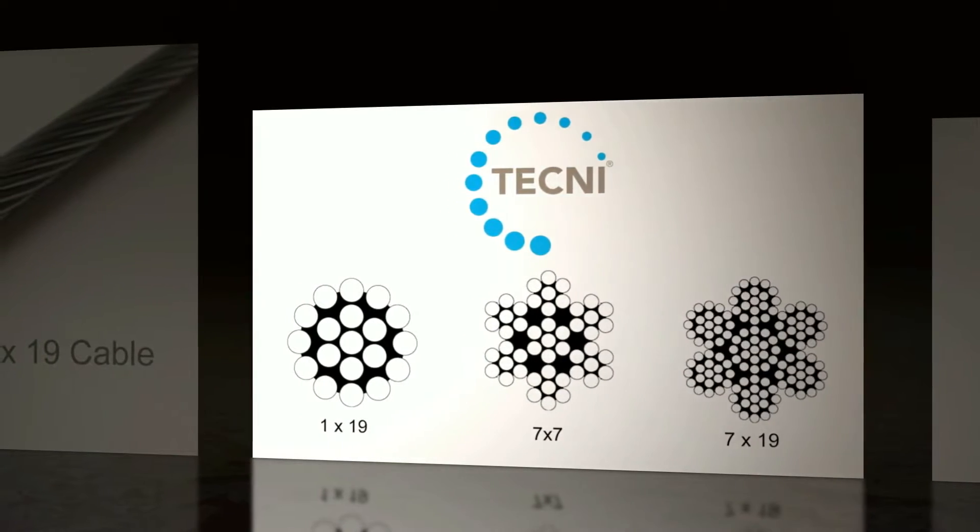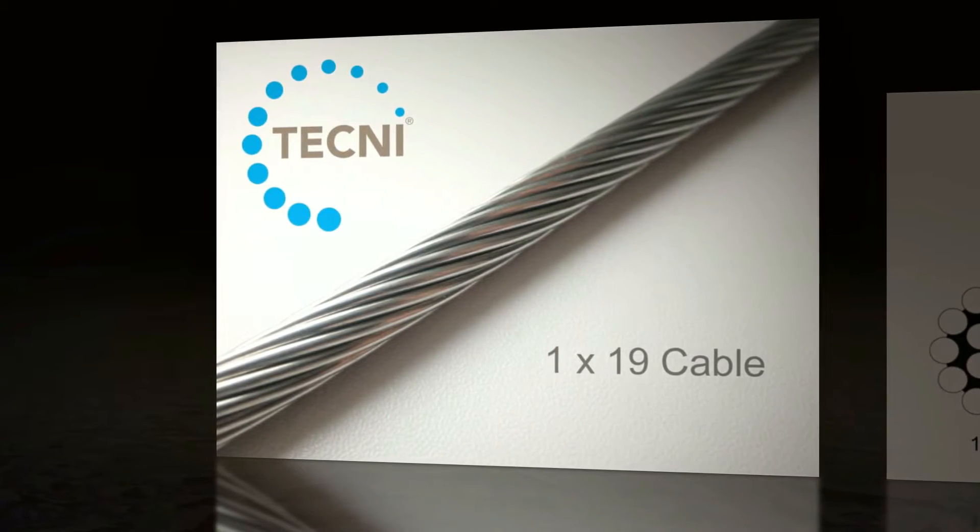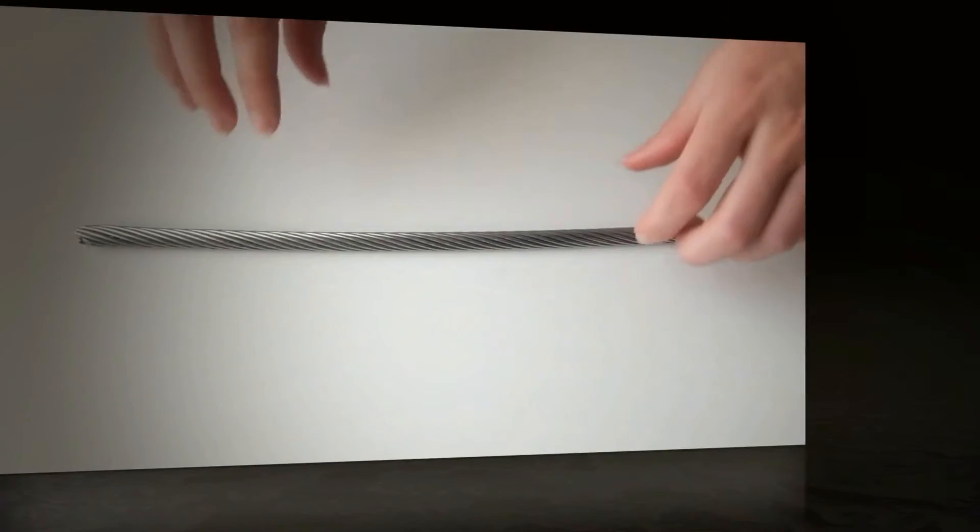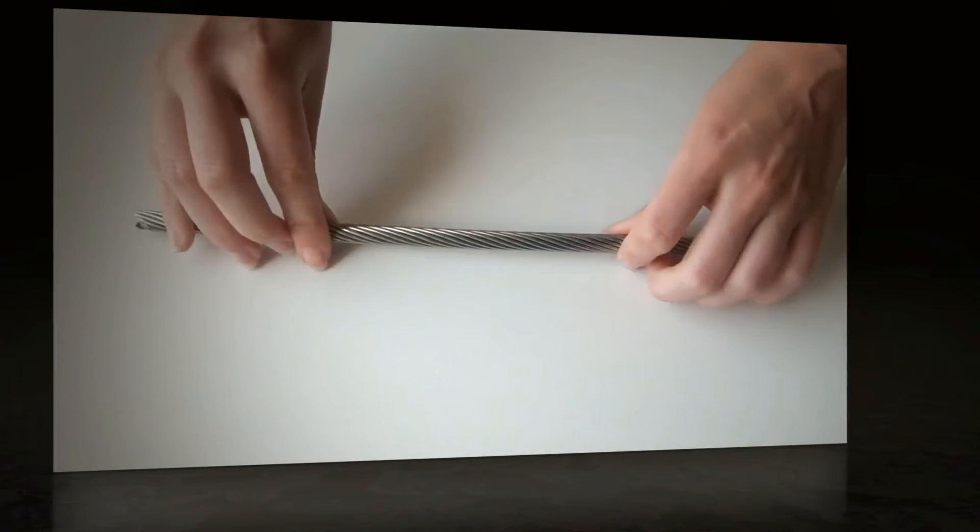1x19 means the rope is made up of 19 individual wires. It is the least flexible of the rope constructions and is not good for bending around tight bends. It has a smooth appearance and high breaking strength with low stretch characteristics.